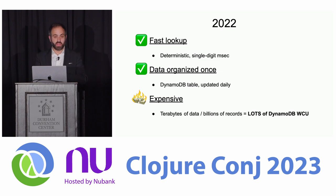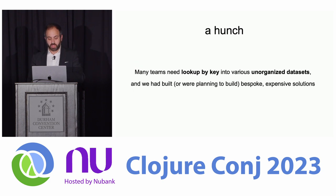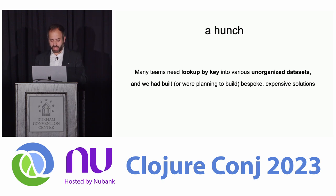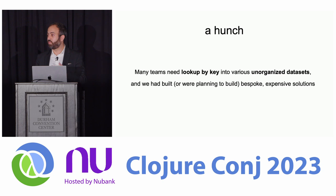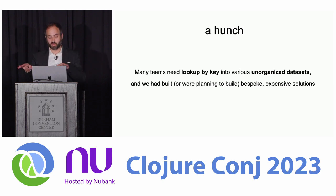Two use cases so far — we have unorganized data, and we want to gain leverage into it. We had a hunch that these are not the only two use cases. When you have two use cases, you probably have like five or six at least. So we had a hunch that many teams needed lookup by key into various unorganized data sets, and we had built or were planning to build expensive solutions, bespoke solutions, solutions that only solve a single use case. Independent teams building solutions to their own problems. But we think there was an underlying categorical problem.